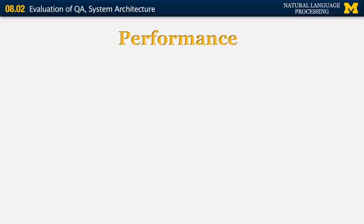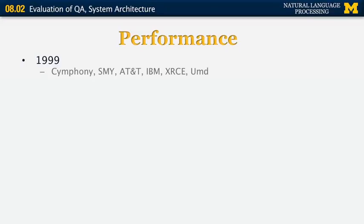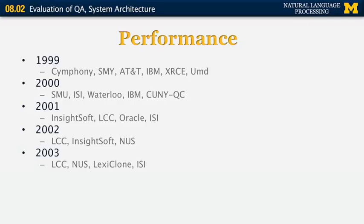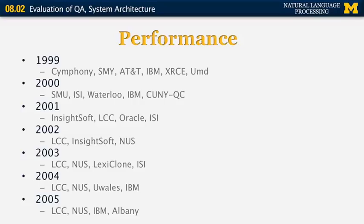Looking at system performances over the first few years: in 1999, top systems came from Buffalo (Symphony), SMU, AT&T, IBM, Xerox Europe, and University of Maryland. In 2000, SMU, ISI, University of Waterloo, IBM, and Queen's College. In 2001, InsightSoft from Russia, LCC (spun off from SMU), Oracle, and ISI. In 2002, the same groups plus NUS, the National University of Singapore. Every year there were more than 30 participating systems.